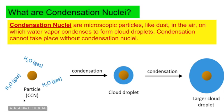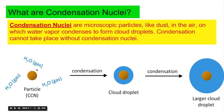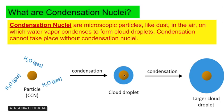What are condensation nuclei? Condensation nuclei are microscopic particles like dust in the air on which water vapor condenses to form cloud droplets. Condensation cannot take place without condensation nuclei. So pollutants, dust, dirt, sand in the air — you have water vapor that surrounds it. When the air reaches its dew point, the gas will condense onto the condensation nuclei, forming a water droplet or a cloud droplet.